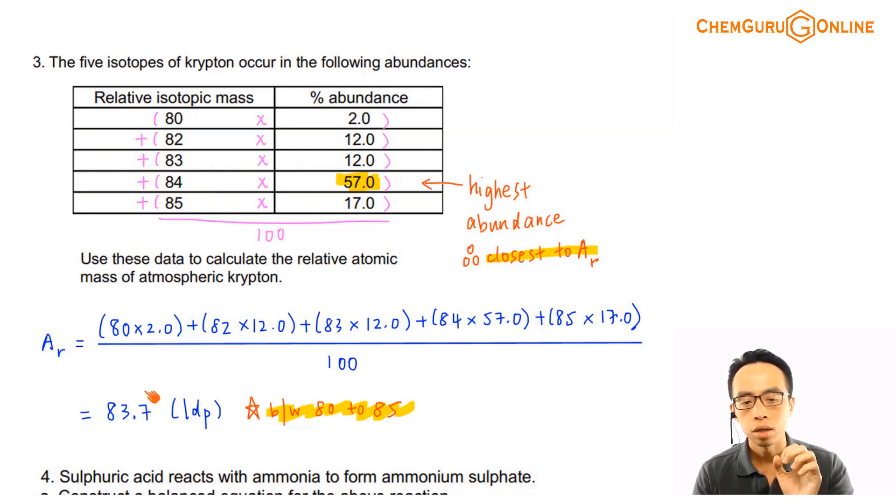So therefore, the weighted average, the relative atomic mass, should be closest to 84. Because more than half of the sample is 84, your weighted average has to be closest to the isotope with the biggest abundance.